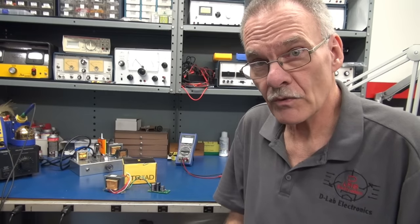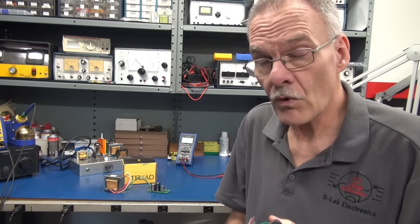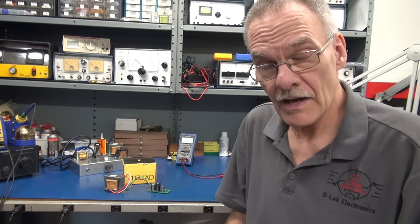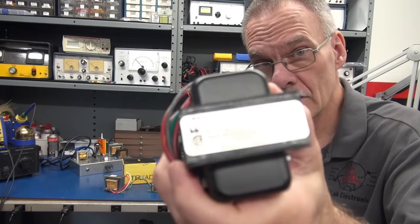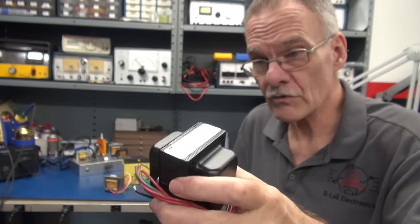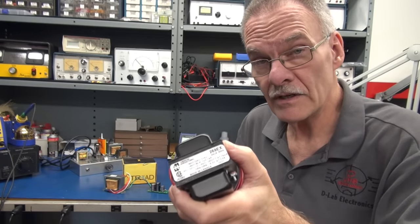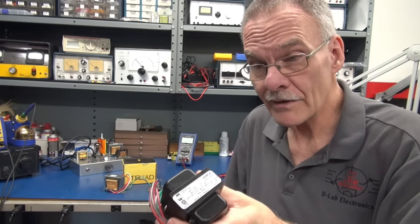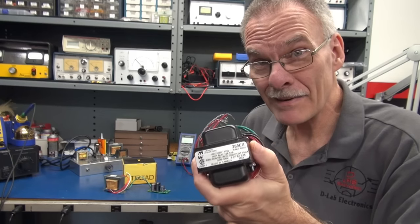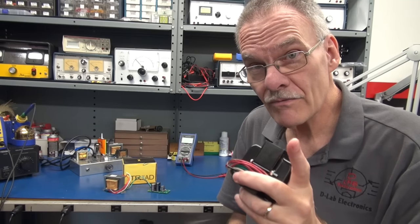The subject we're going to cover in this video is the power transformer. For these little three to four watt class A amplifiers, I've been recommending the Hammond 269EX. It's a great little transformer, has the right high voltage and filament current capability that you need to build these amps. However, it's about 75 bucks for this transformer. What's the best alternative?